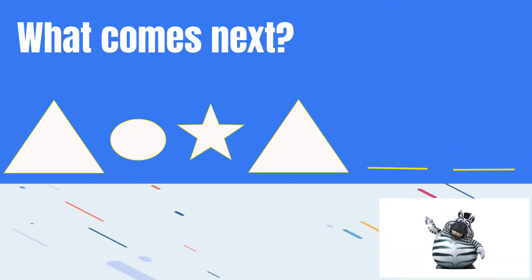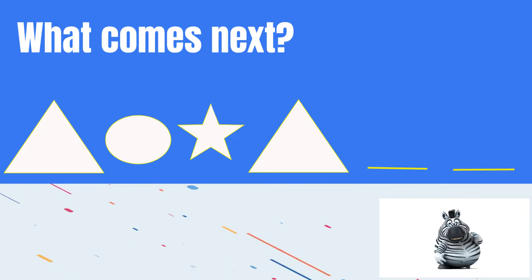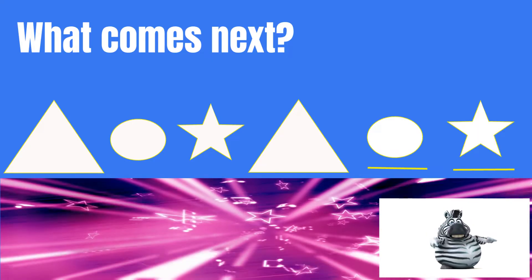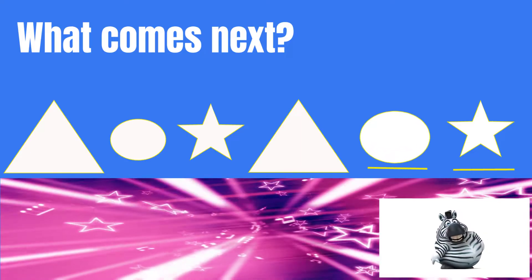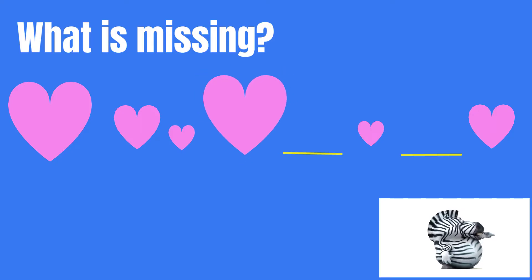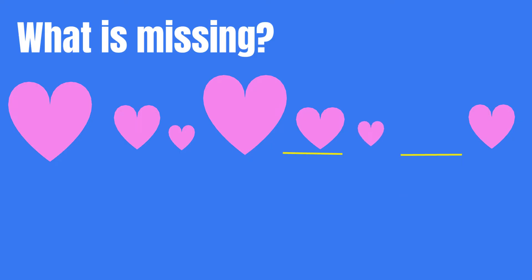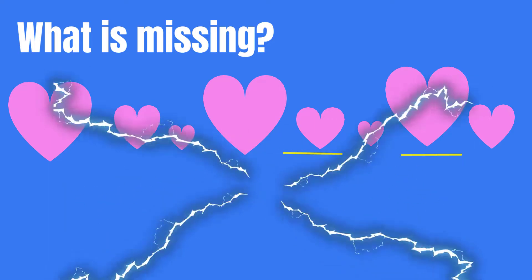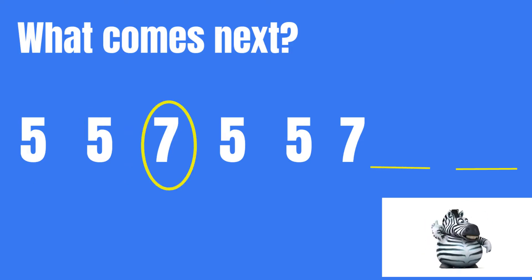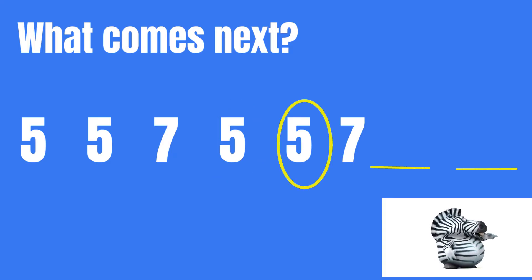What comes next? Triangle, circle, star. Triangle, circle, star. That's right! What is missing? Large, medium, small, large, medium, small, large. Large, medium, small, large.